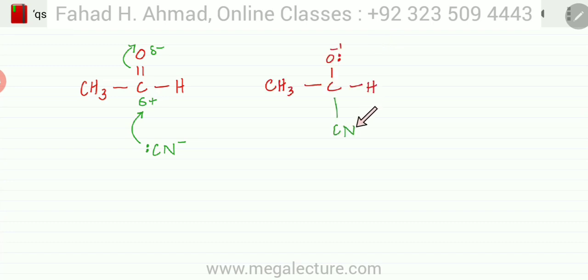In this next image you can see the CN has attached itself and electrons in the double bond have gotten repelled creating a negative charge. In the next step, an H+ is going to be attracted to this O- and bond with it.